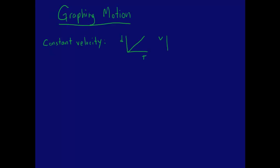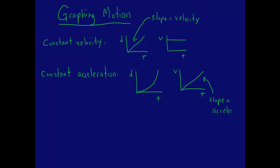We look at graphs of two types of motion: constant velocity and constant non-zero acceleration. The slope of a d versus t graph equals velocity. The slope of a v versus t graph is acceleration. The area under a v versus t graph equals displacement.